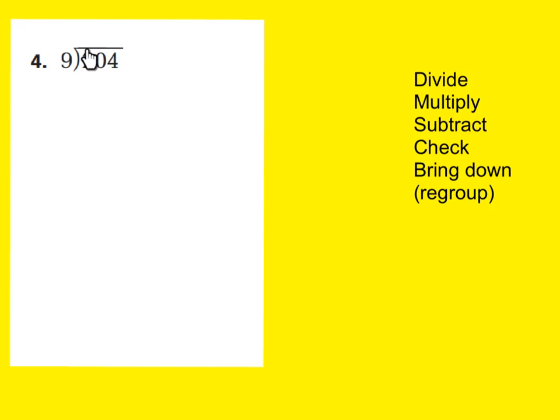Let's go on to question 4 in our GoMath book: 204 divided by 9. If I have 2 mats or 2 groups of 100 and I have to share with 9 people, there's no way each person gets a group of 100. Therefore, I will not start my quotient in the hundreds place — I'm going to start it in the tens place because we're going to regroup, breaking this into 20 tens.